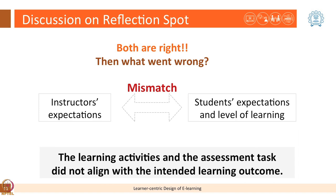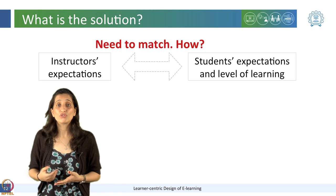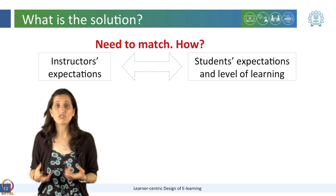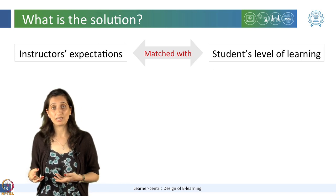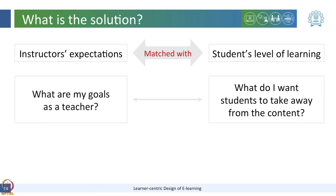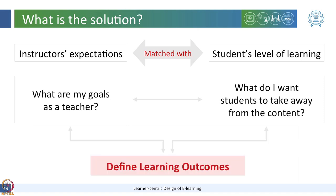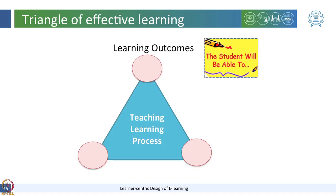The learning activities and the assessment task did not align well with the intended learning outcomes. The solution is to match these two expectations by aligning them. To align the instructor's expectations with the students' level of learning, the instructor first needs to ask: what are my goals as a teacher, and what do I want students to take away from the content? This will help in defining specific learning outcomes, which is the first component of the triangle of effective learning.